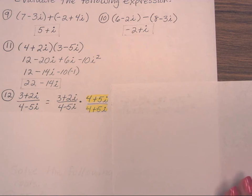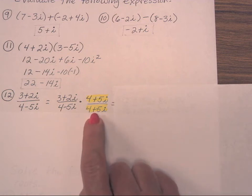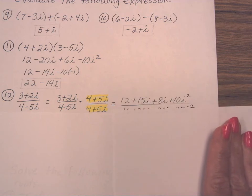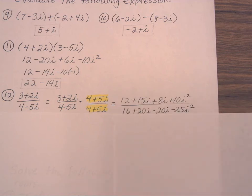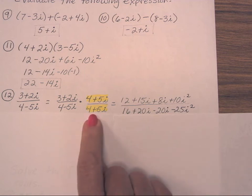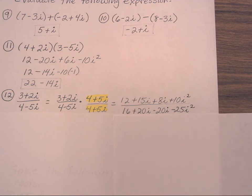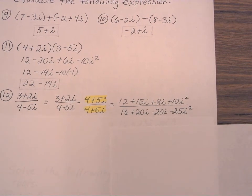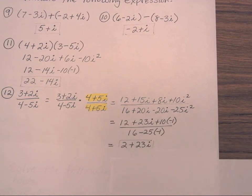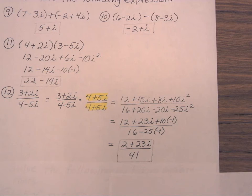There are plenty of opportunities to make a careless mistake, so don't get in a hurry. If you make a mistake but I can tell that you chose the complex conjugate correctly, you're going to get some partial credit. If I see that you got started on multiplying and did most of it correct, you'll get more credit. But students who get the complex conjugate incorrect can't get credit for anything else. Using FOIL and remembering that i squared is negative 1, you should have a final answer of 2 plus 23i over 41.